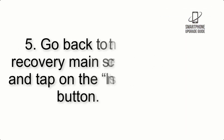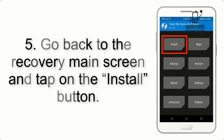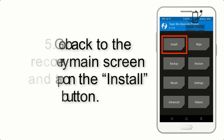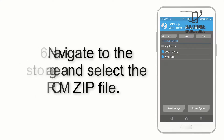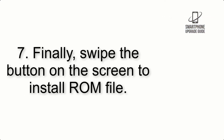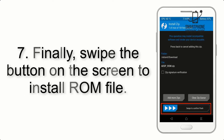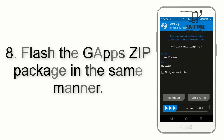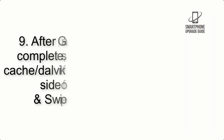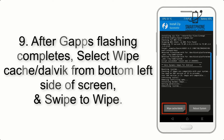Step 5: Go back to the recovery main screen and tap on the Install button. Step 6: Navigate to the storage and select the ROM zip file. Step 7: Swipe the button on the screen to install the ROM file. Step 8: Flash the gapps zip package in the same manner.